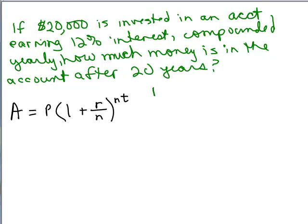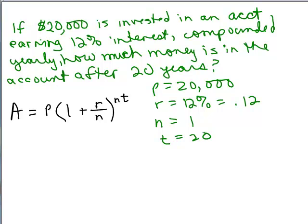So my principal here is 20,000 and my rate is still 12% or 0.12. My variable n, that's how often, how many times per year it's compounded. Well, it's only yearly, so n is just 1 in this case, once a year. And the time is in years, it's 20 years. So t equals 20.